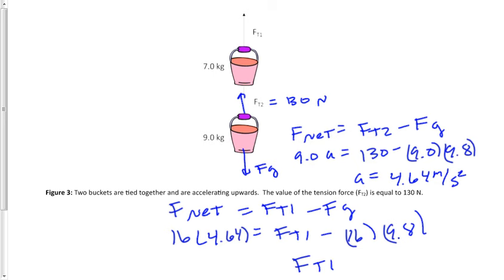And then the value of force tension 1 is going to equal 230 newtons rounded to two significant digits.